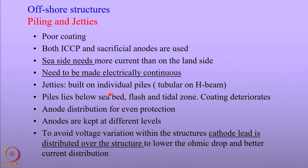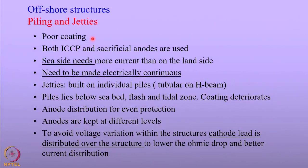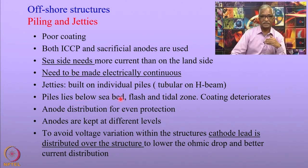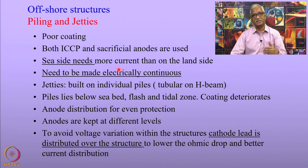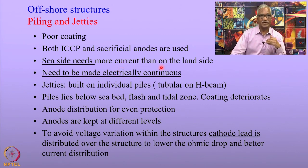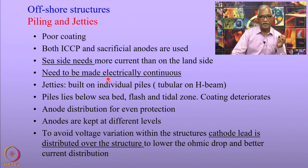Care needs to be taken to avoid stray current corrosion of structures. For piling and jetties, good coatings are essential — poor coatings are a cause of concern. One problem in piling and jetties is that in splash and tidal zones, the coating deteriorates because of continuous washing by seawater. If structures on the offshore and onshore sides are connected, the sea-side structure requires more current than the land-side structure and they need to be made electrically continuous.